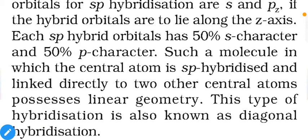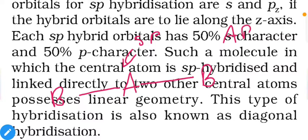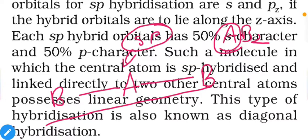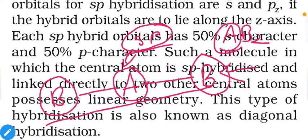For example, if atom A has sp hybridization in an AB₂ molecule, the shape will be linear. Keep in mind that each atom in a molecule has its own separate hybridization — the sp hybridization of the central atom A does not apply to the B atoms. The hybridization of B depends on their own electronic configuration, which will be discussed in upcoming points.